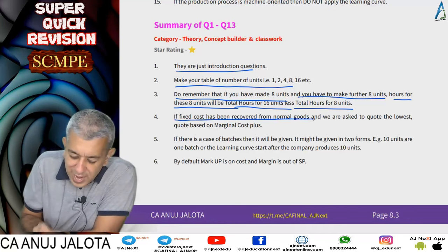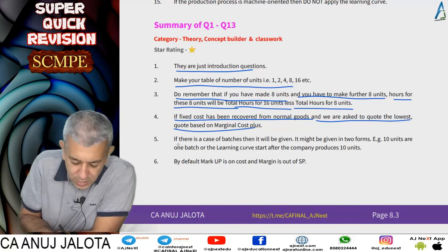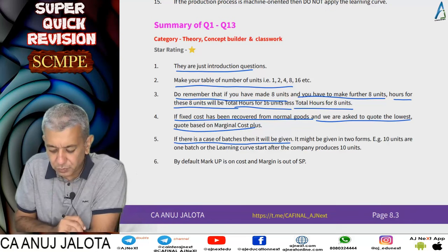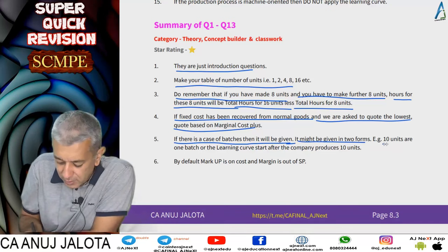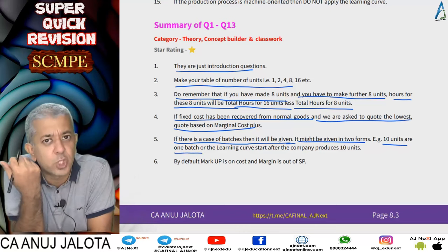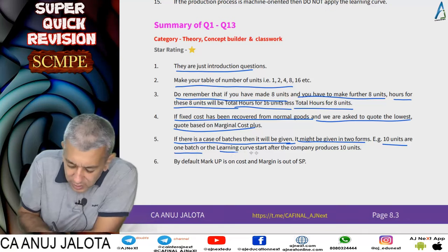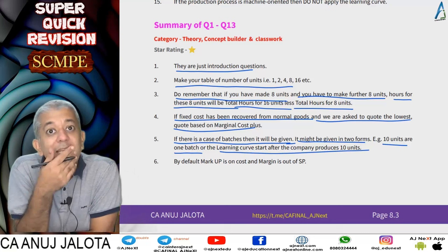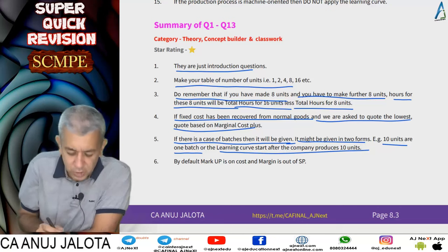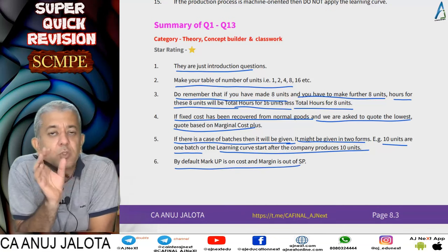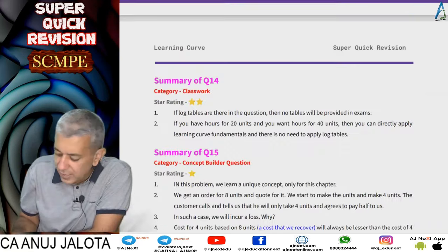If fixed cost has been recovered from normal goods and we are asked to quote the lowest price, we should follow marginal cost plus. If there is a batch concept, the question will tell you — for example, 10 units equals one batch. The learning curve will start after the company has produced 10 batches, meaning 10 units is one batch. By default, 'markup' is always used on cost and 'margin' is always used on selling price.